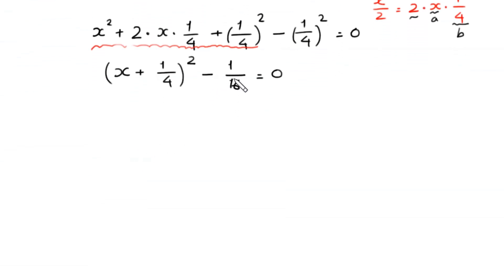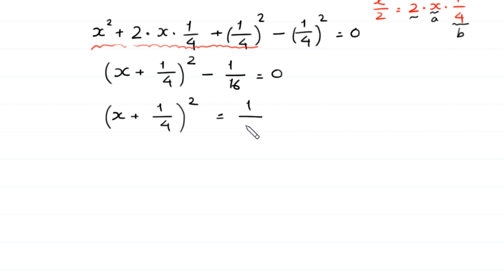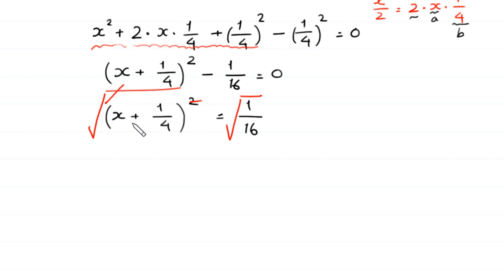So we have x plus 1 over 4 whole squared minus 1 over 16 equals 0. We move the negative 1 over 16 to the right side: x plus 1 over 4 whole squared equals 1 over 16. From here we take the square root of both sides. The square cancels with the square root, leaving x plus 1 over 4 equals plus or minus 1 over 4.